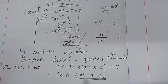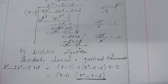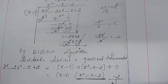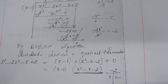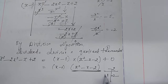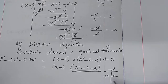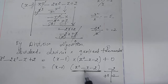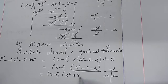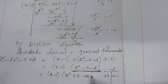Now, factorizing the quadratic term x square minus x minus 2 by our usual method. Product of 1 and minus 2 is minus 2. We need two numbers whose product is minus 2 and addition is minus 1. Put minus 2 and plus 1 — check: their product is minus 2, their addition is minus 1. Therefore, split minus x into plus x minus 2x. So x square minus x minus 2 becomes x square plus x minus 2x minus 2.